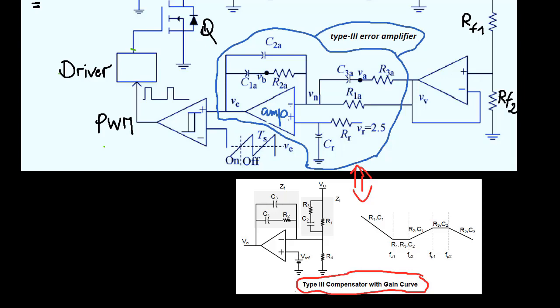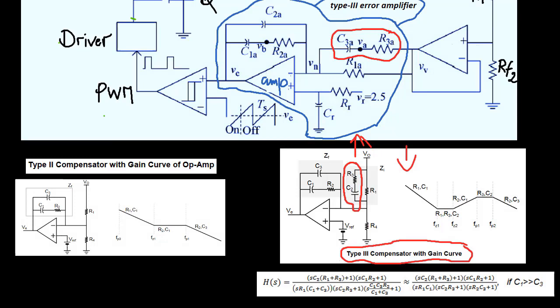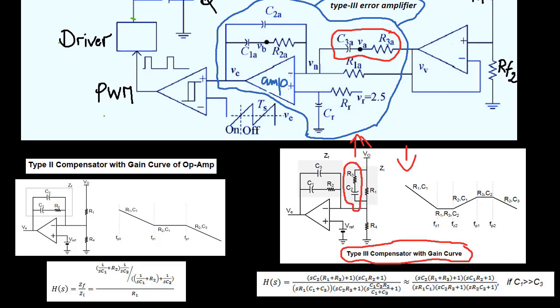In later analysis videos, if it becomes apparent that just a type 2 is sufficient, both components can then be removed. A type 3 amplifier is known to provide 3 poles and 2 zeros, a type 2 provides 2 poles and 1 zero.